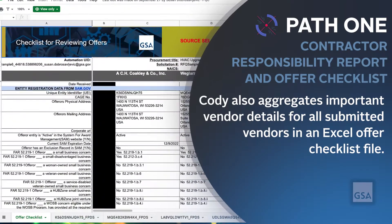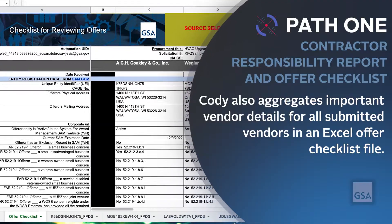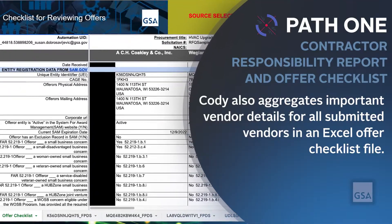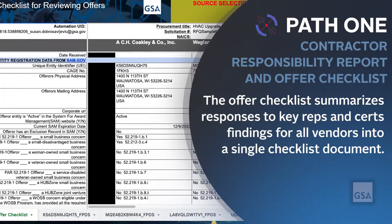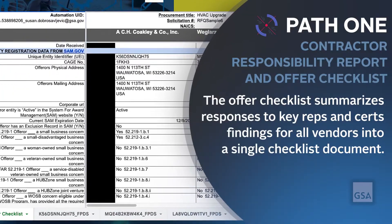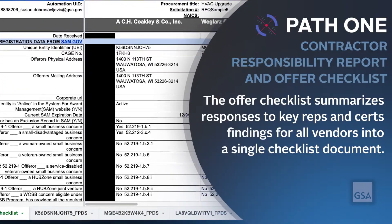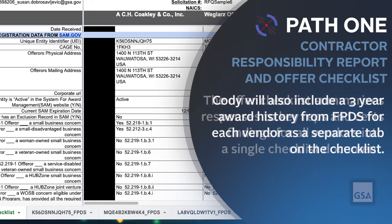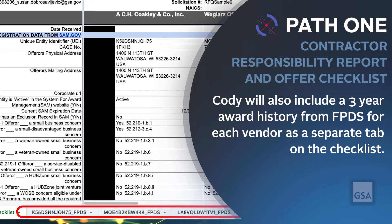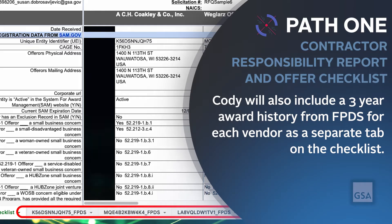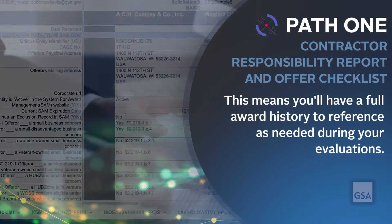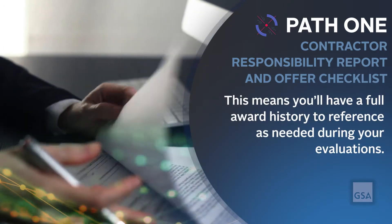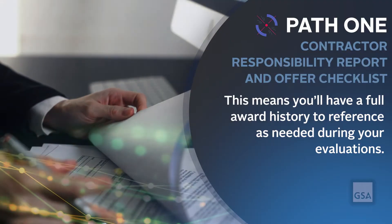Kodi also aggregates important vendor details for all submitted vendors in an Excel offer checklist file. The offer checklist summarizes responses to key reps and certs and findings for all vendors into a single checklist document. Kodi will also include a three-year award history from FPDS for each vendor as a separate tab on the checklist, giving you a full award history to reference during your evaluations.